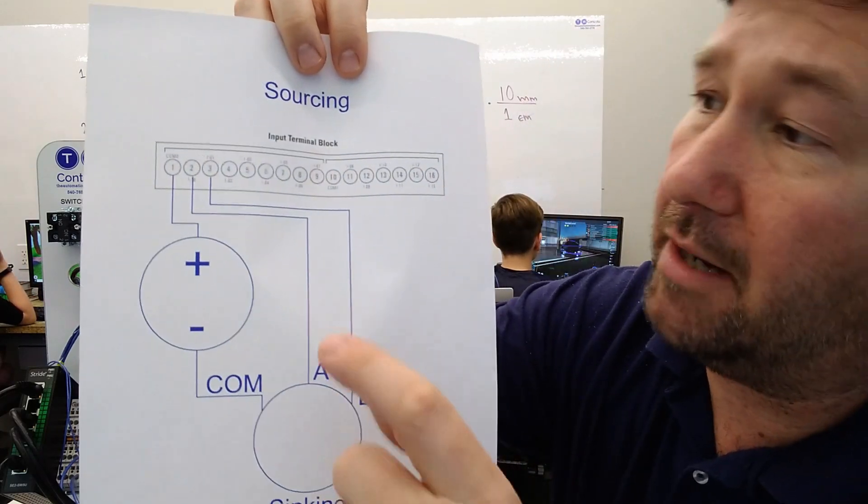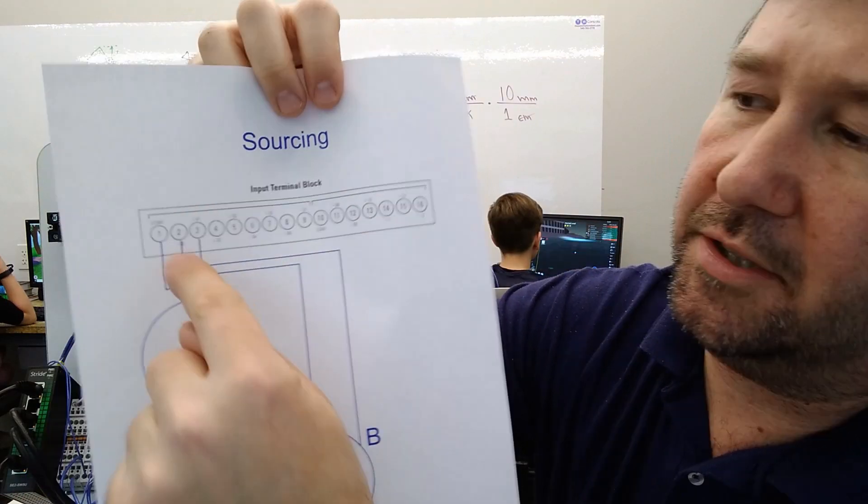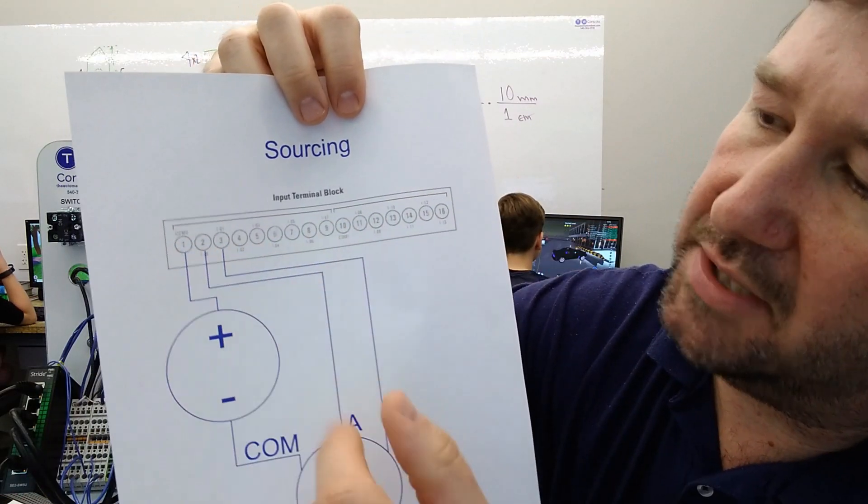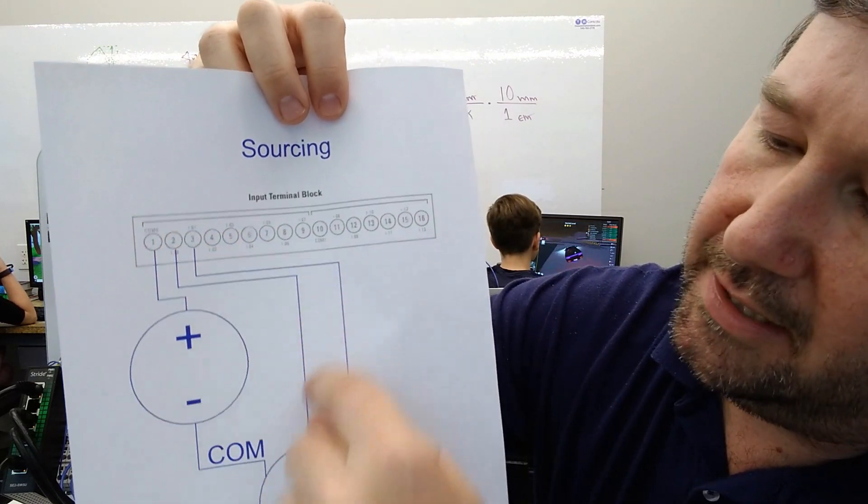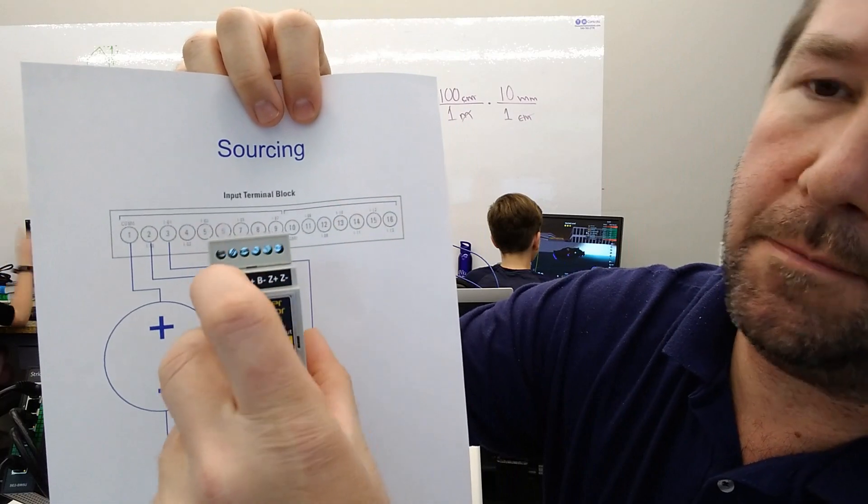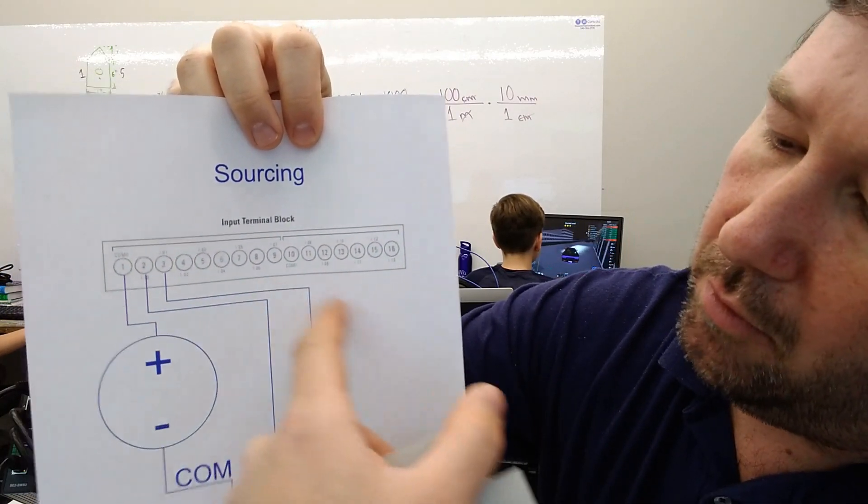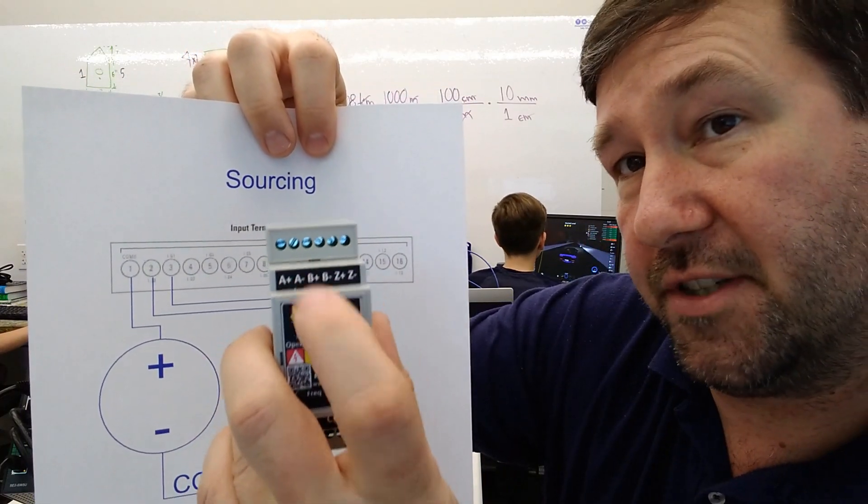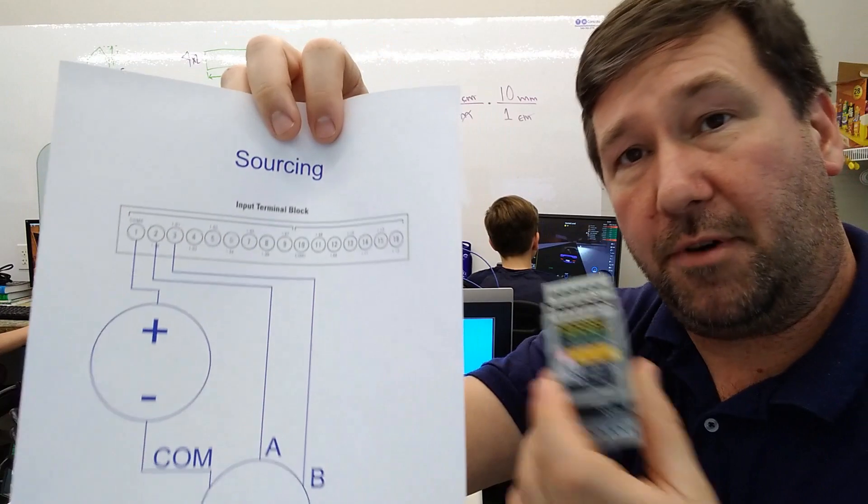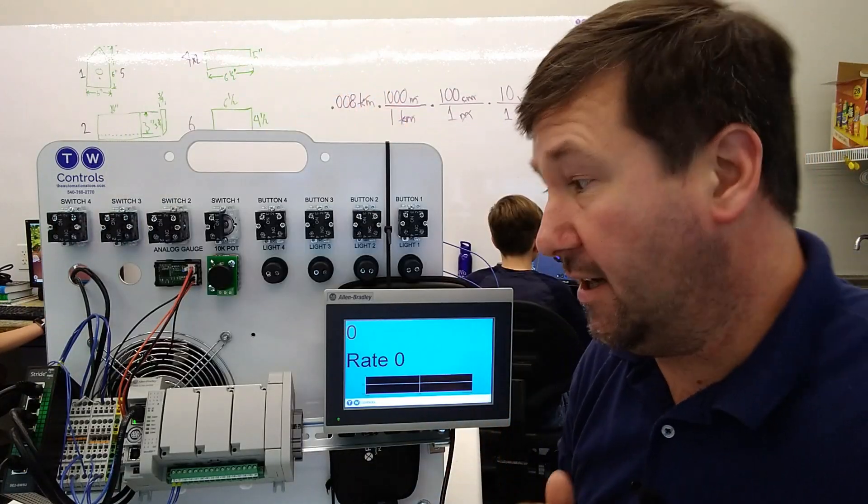So we're going to use this wiring diagram to wire ours. Mainly we're going to feed 24 volt to the common of inputs 0 through 7. And then we're going to take input 0 to channel A, which will actually be the A plus on our encoder simulator. And then we're going to take input 1 to channel B, which will be the B plus on our encoder simulator. Now for this example, we're not actually going to use the Z marker, but you would wire it the same way if you were.